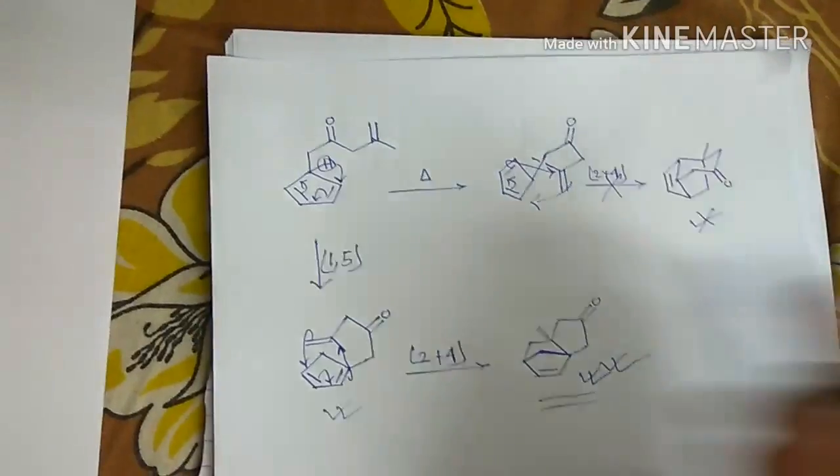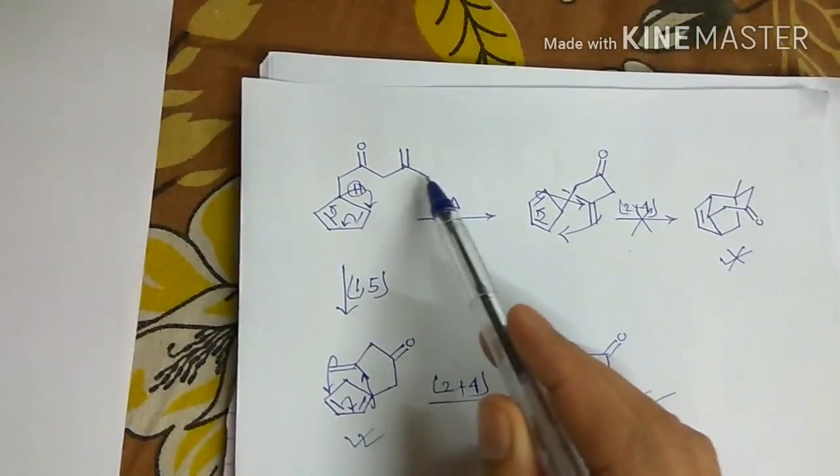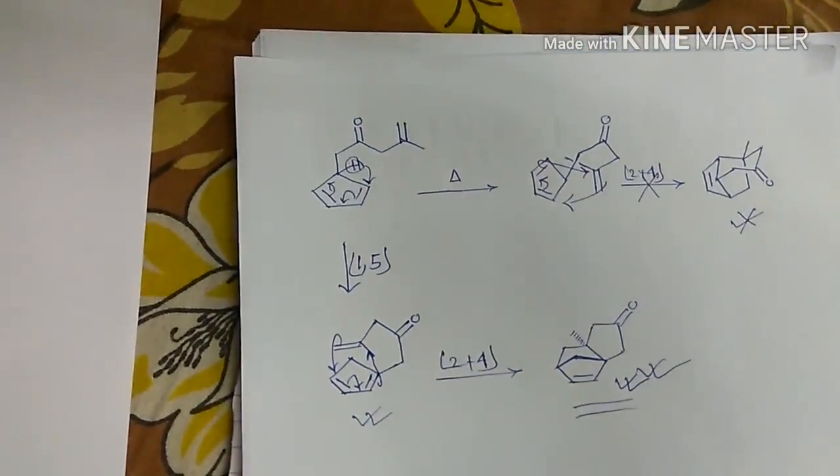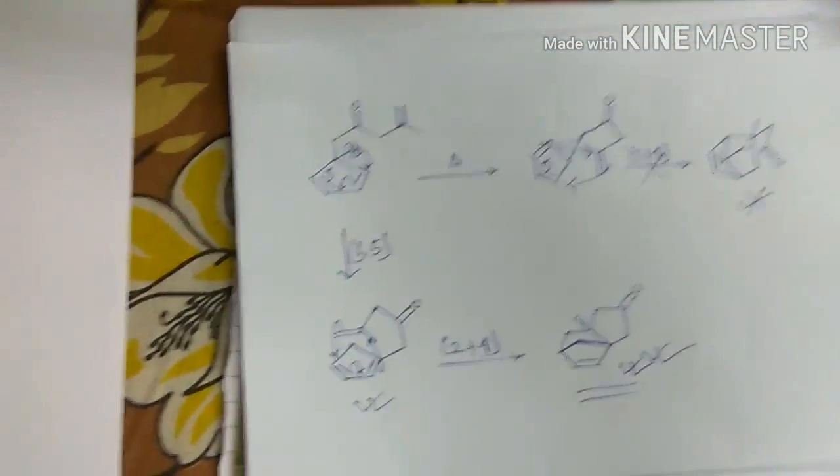Now we will see if there is any electron withdrawing group over here, then if the reaction takes some other turn or not. So for this we have to see another example.